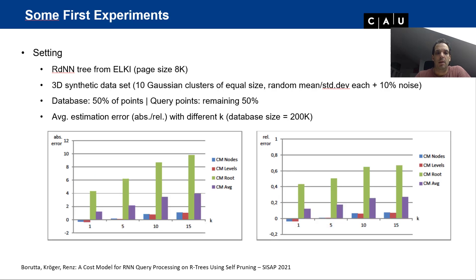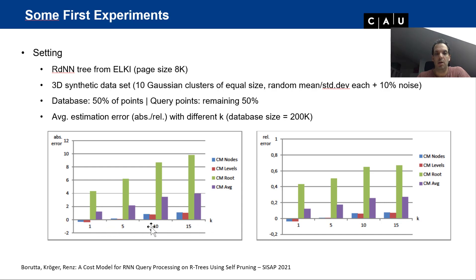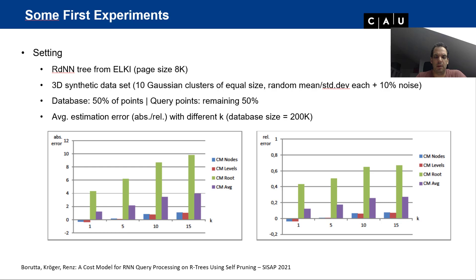We also varied k with a fixed database size of 200,000. With increasing k the costs increase. Again the simple root-only variant is the worst, as expected.